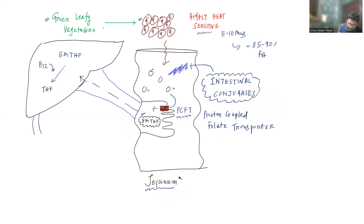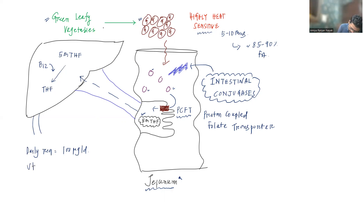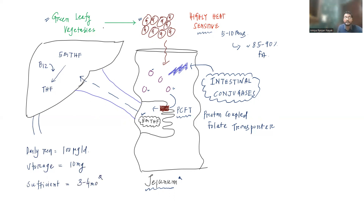Now for some important numbers: the daily requirement for folic acid is around 100 micrograms per day, compared to only 3 micrograms per day for vitamin B12. The storage amount is around 10 milligrams, compared to 3 milligrams for B12. This folic acid storage is sufficient for only 3 to 4 months, whereas vitamin B12 storage is sufficient for 3 to 4 years.